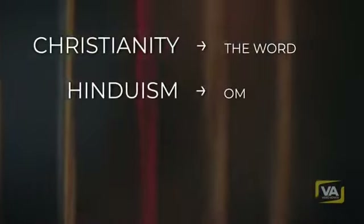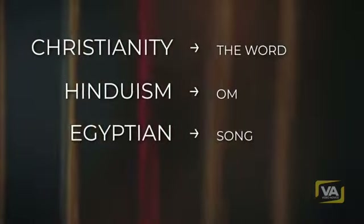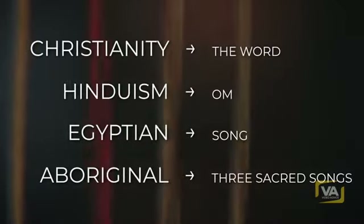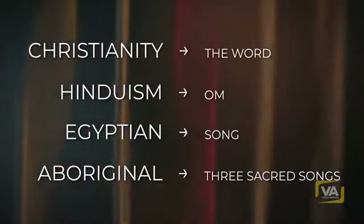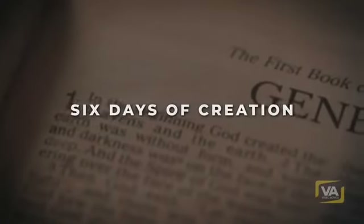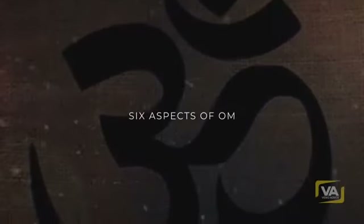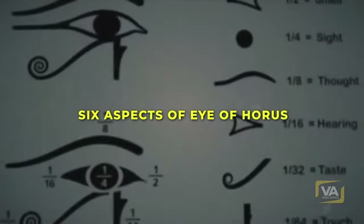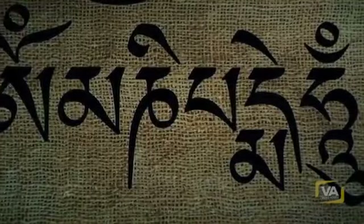In Christianity it's the Word. In Hinduism it's Om. The Egyptians believe the universe was sung into creation, and the original people of Australia believe that the world was created with three sacred songs. We also see phenomenal similarities between the six days of creation in Christianity, the Word that created everything, the six aspects of Om, and the six aspects of the all-seeing eye of Horus. You start seeing the connections between all these ancient cultures and their creation stories.